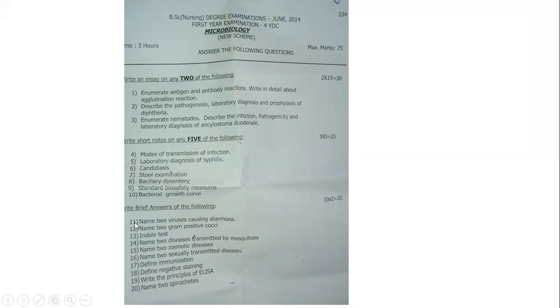Write brief answers on the following — there is no choice in this part. Each carries two marks: name two viruses causing diarrhea, name two gram-positive organisms, indole test, name two diseases transmitted by mosquitoes, name two zoonotic diseases, name two sexually transmitted diseases, define immunization, define negative staining, write the principle of ELISA, and name two spirochetes. You just have to mention two things per question.